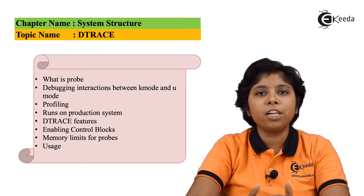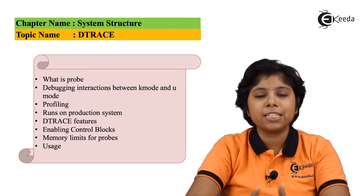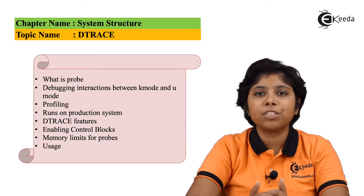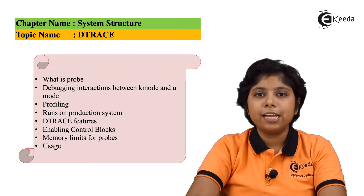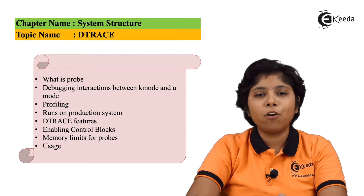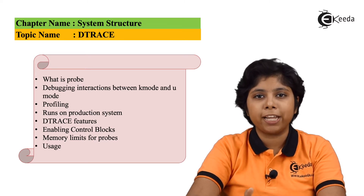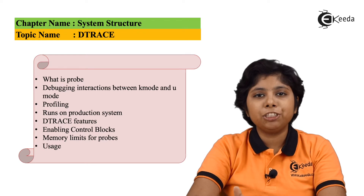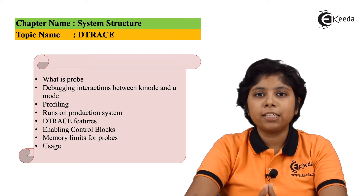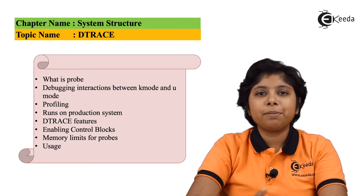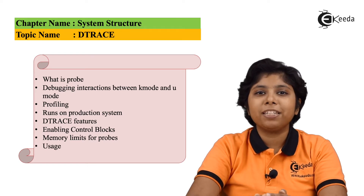Only users with DTrace privileges can use these features, as DTrace can retrieve private kernel data and also modify data in some cases. The generated code then runs in the kernel and enables communication between user and kernel. There are many consumers who want to access these probes. The provider creates these probes, and when a probe fires, the operations being executed are managed by the kernel.